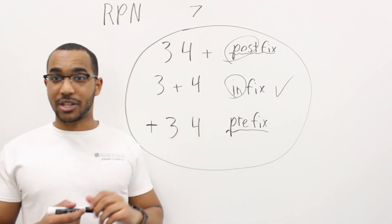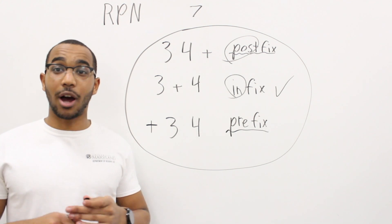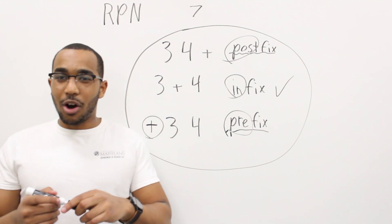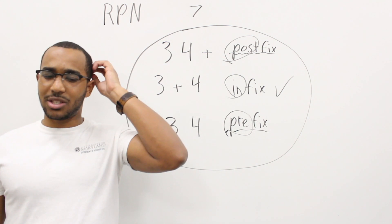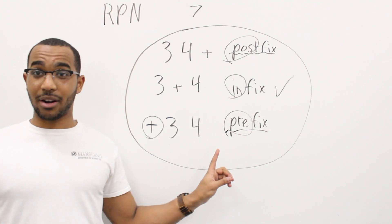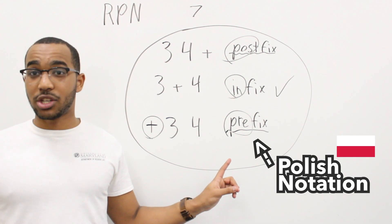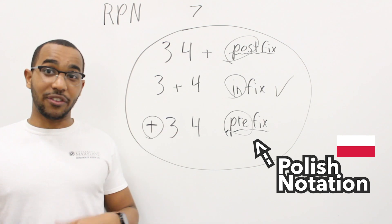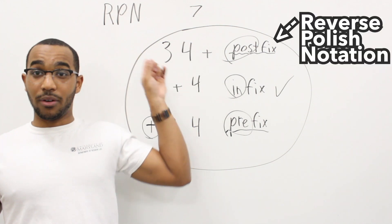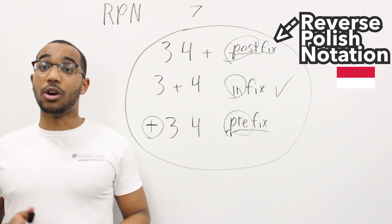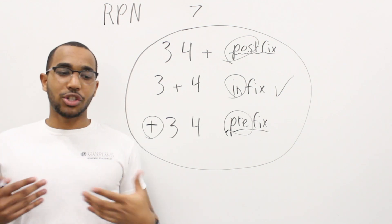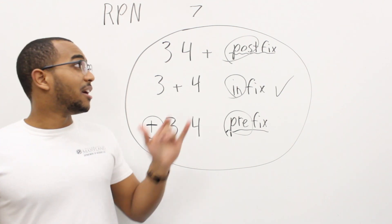Then we have prefix notation, where our operator is before the operands. So which one of these is Polish and which one is reverse Polish? Prefix notation is Polish notation, and when you reverse prefix notation, you get postfix notation — and this is reverse Polish notation. Our job in this question is to evaluate this.